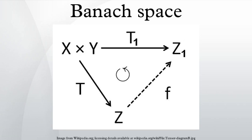The closed linear subspace M of X is said to be a complemented subspace of X if M is the range of a bounded linear projection P from X onto M. In this case, the space X is isomorphic to the direct sum of M and ker(P), the kernel of the projection P. If X and Y are Banach spaces and T is in B(X, Y), there exists a canonical factorization of T, where the first map is the quotient map and the second map T₁ sends every class x + ker(T) to the image T(x) in Y.